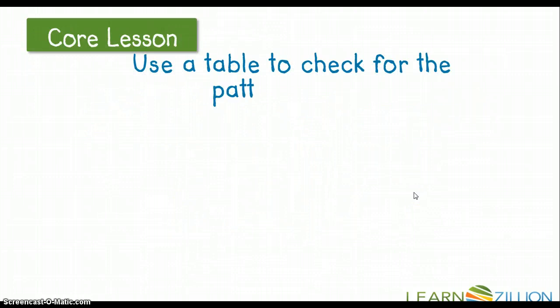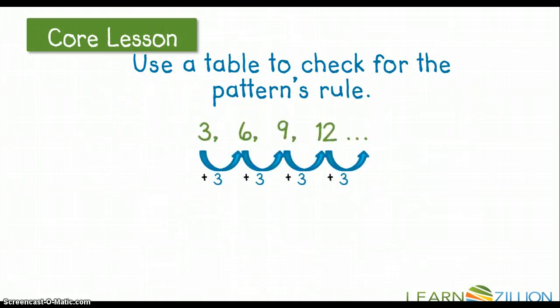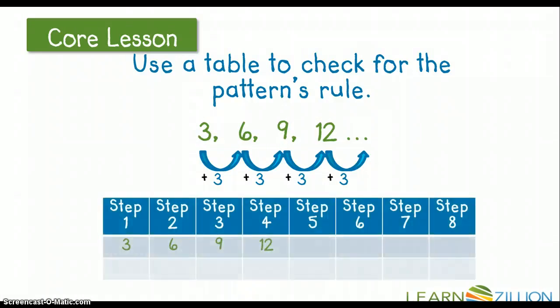So we're going to use the table to check for the patterns rule. This helps us to organize our thinking as mathematicians. So there's our table. And it is a vertical table. This one's just really long. We looked at these yesterday. And these are our steps. So we have step 1, we have 3. Step 2, 6. Step 3, 9. And step 4, 12. And we think our numbers are increasing, so we are adding.